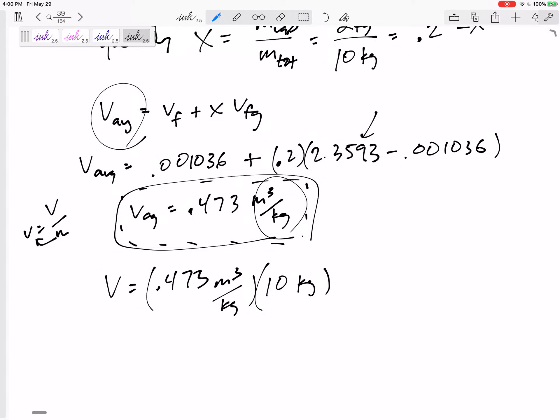So when I do V equals M times V, this is the total, and this is the average right here. 4.73 meters cubed.